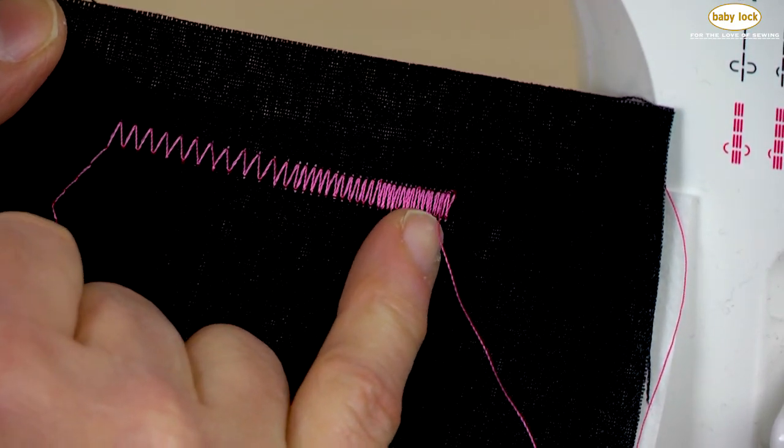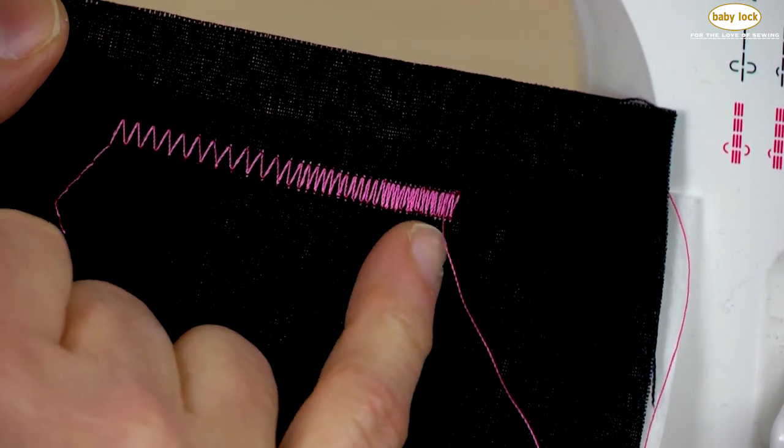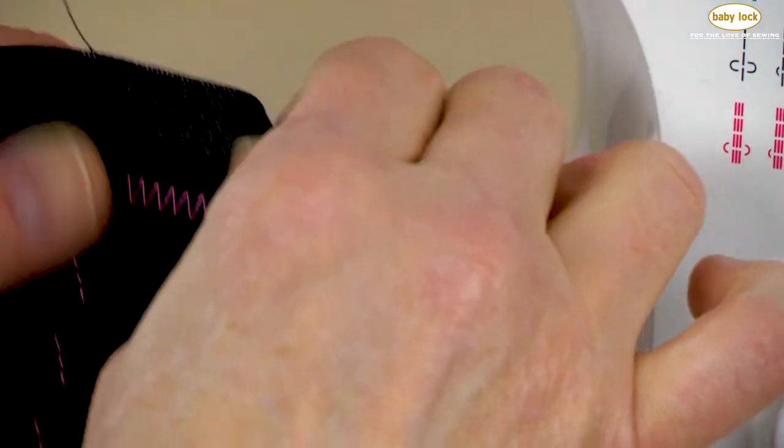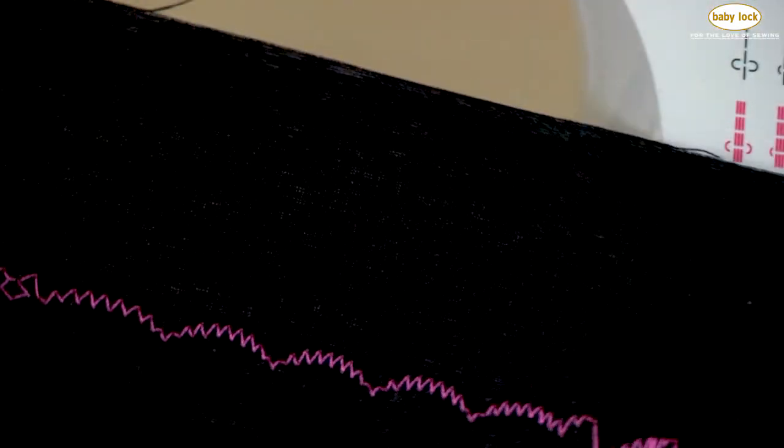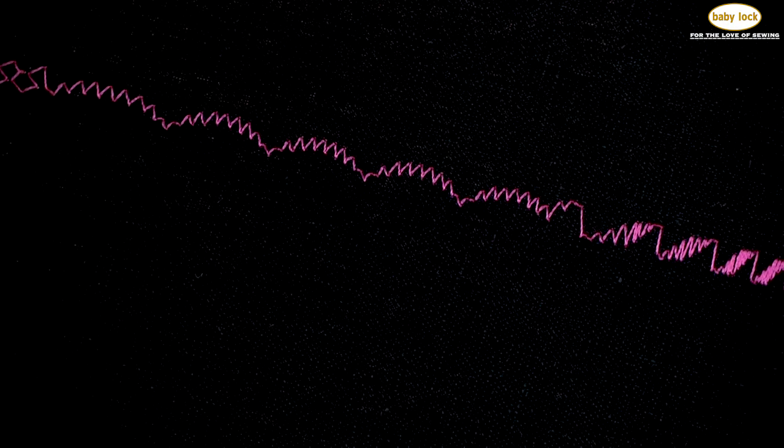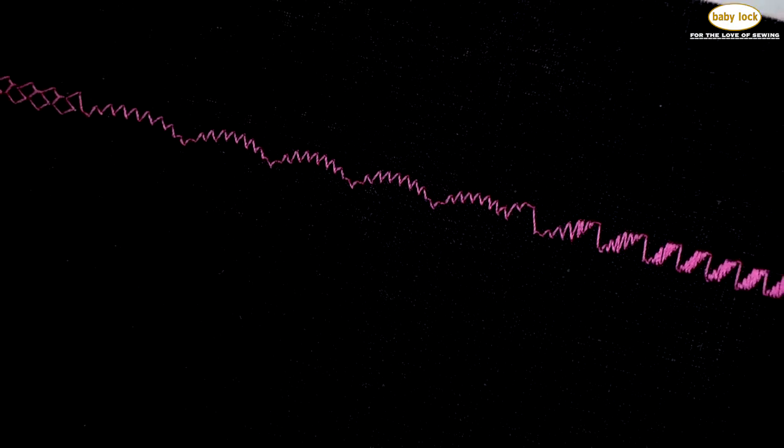Again I could have gotten a little tighter with that stitch length to compact those stitches a little closer together. But you can see how beautiful all these stitches are and how stunning they would look on any project you create on your Baby Lock Joy.